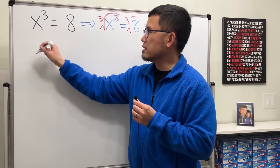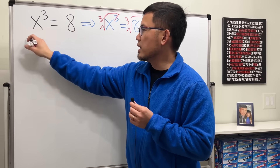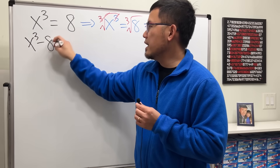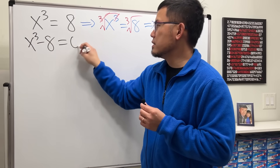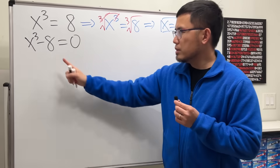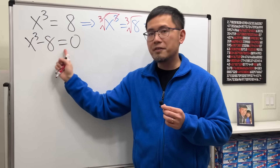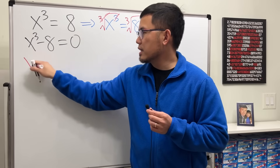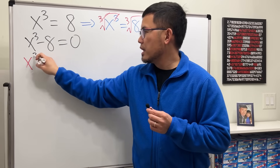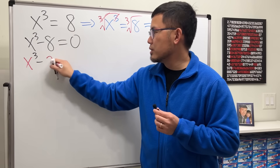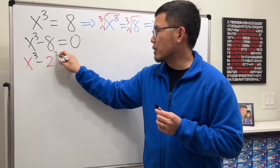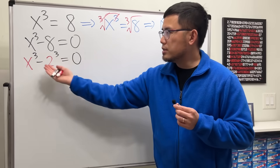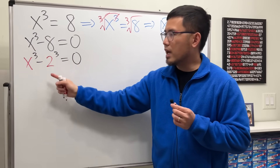To solve it properly, let's move the 8 to the other side so we get x cubed minus 8 equals zero. Now we are going to factor this. We have x cubed minus 2 to the third power equals zero, so we have a difference of two cubes.